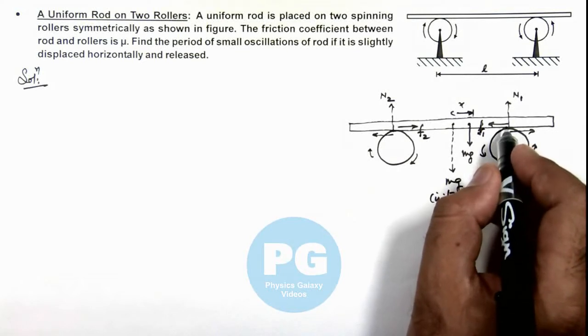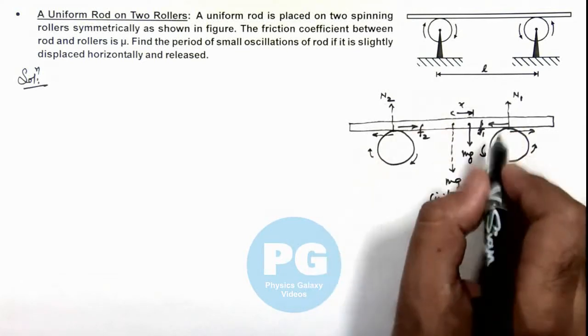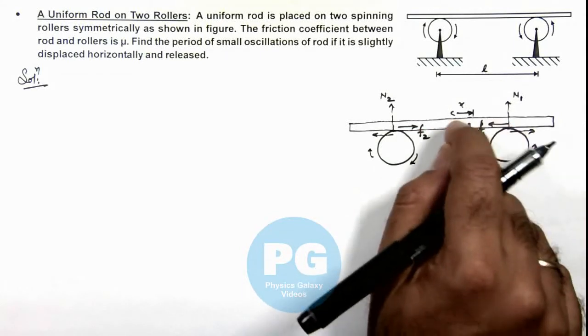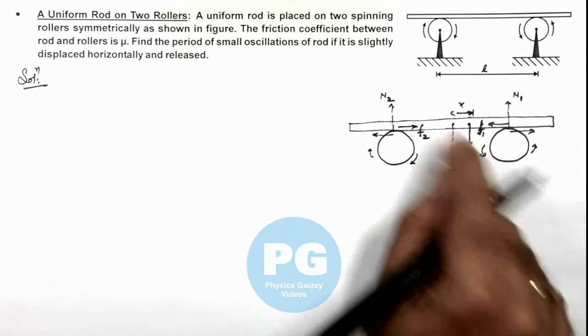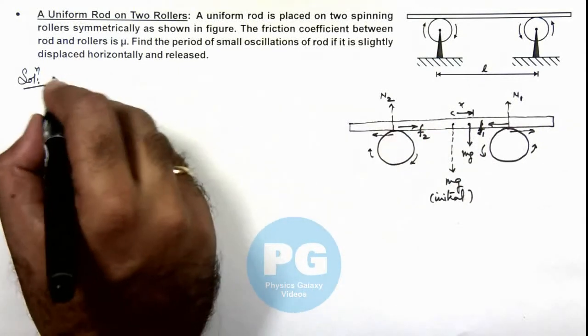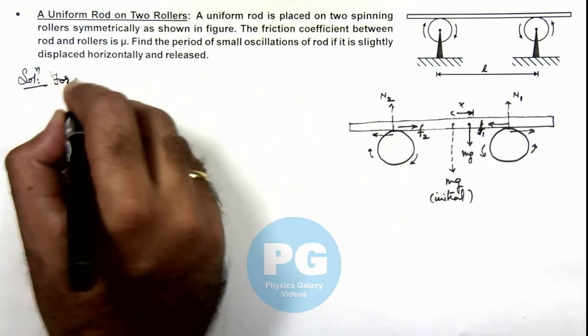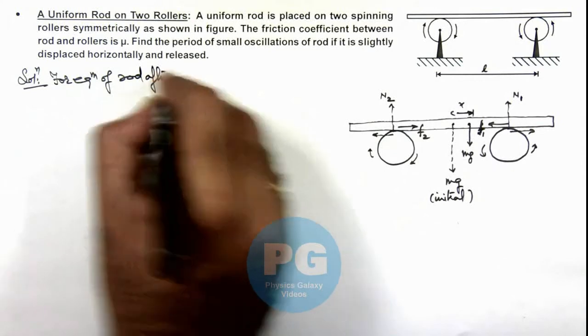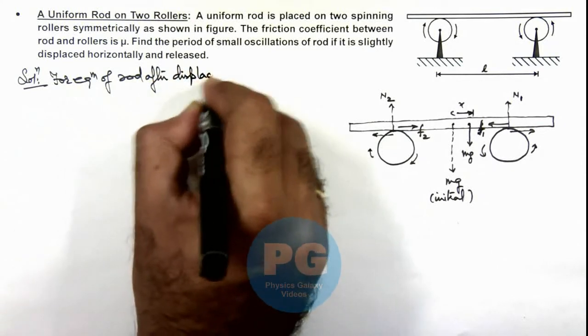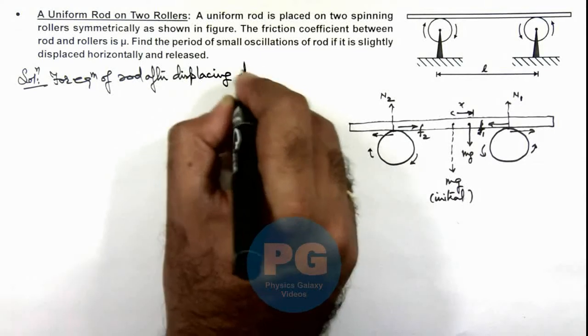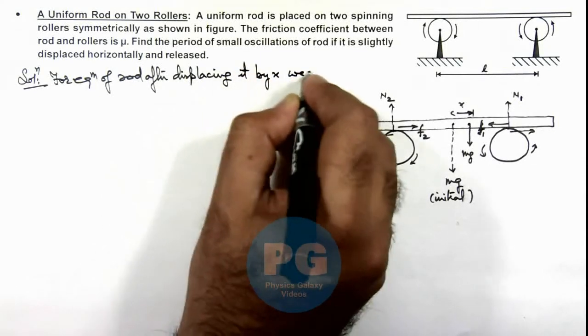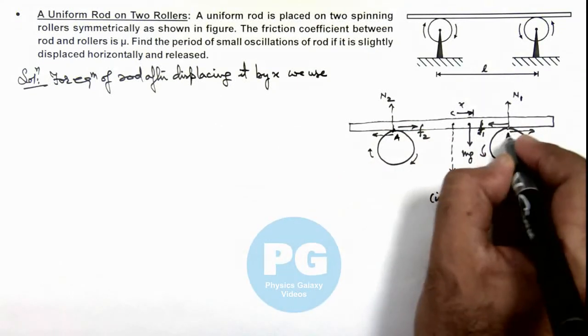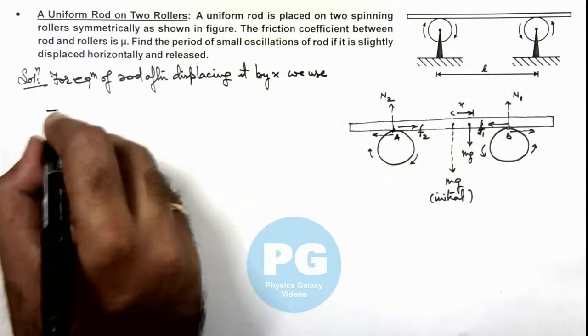So here we can first calculate N₁ and N₂ and in turn we can get the value of friction, and difference of the two will be the restoring force on rod which will tend it back to the initial position. So here we can write for equilibrium of rod after displacing it by x. Say if this point is A and this point is B, we use torque about point A.